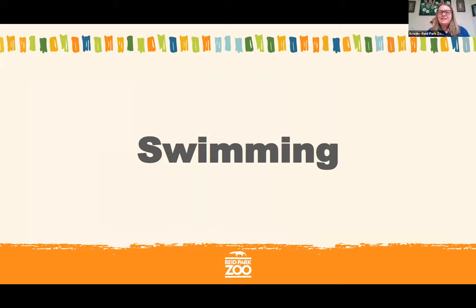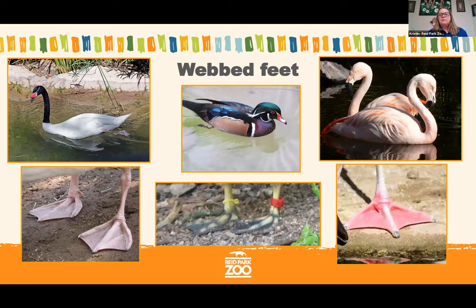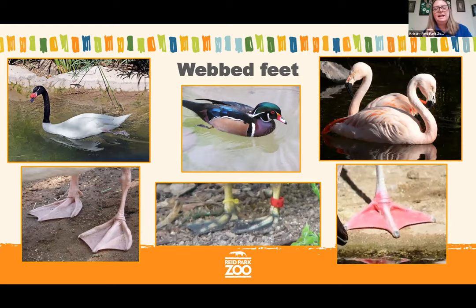Ducks, swans, geese, flamingos — absolutely! A lot of times when people think of animals that swim, they think of birds like a swan, duck, or flamingo. These animals spend a lot of time in the water and have very special feet to help push their way through it — they have webbed feet. If you look at these birds' feet, they have four toes: three in the front and a tiny one in the back. Those three front toes have webbing between them, allowing them to push through the water.